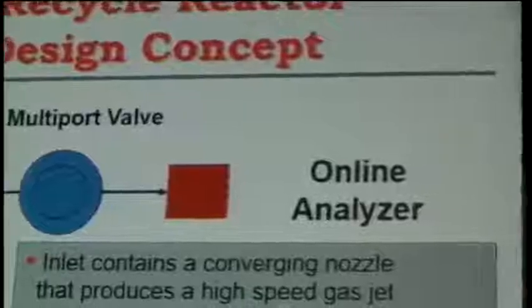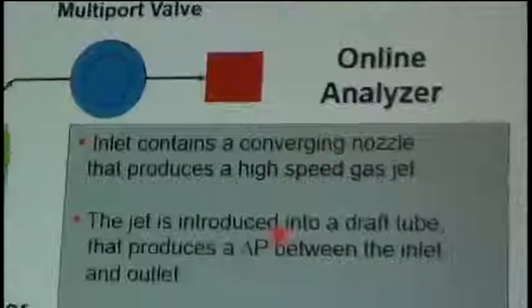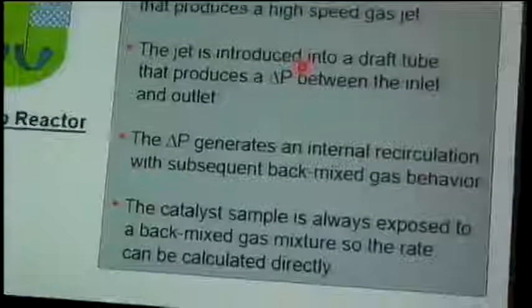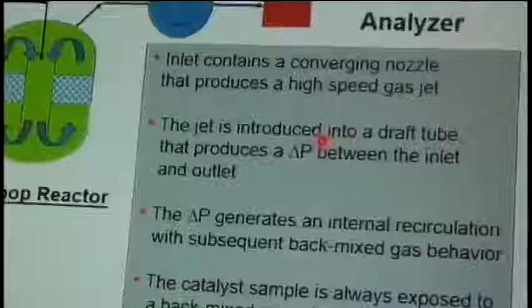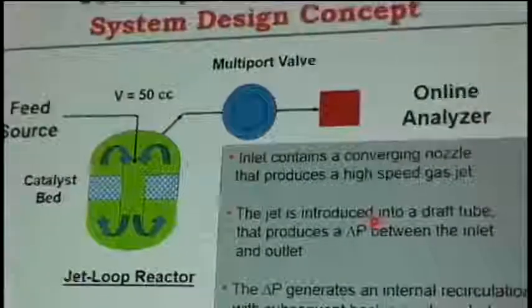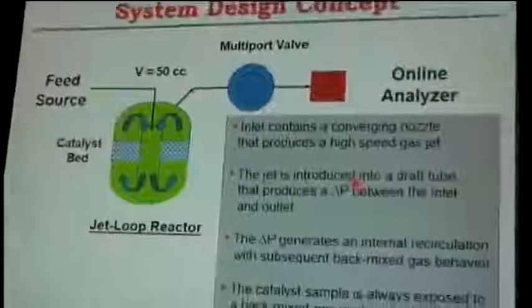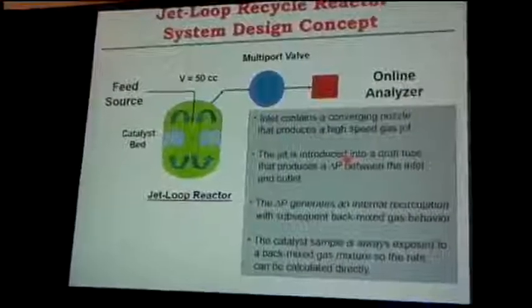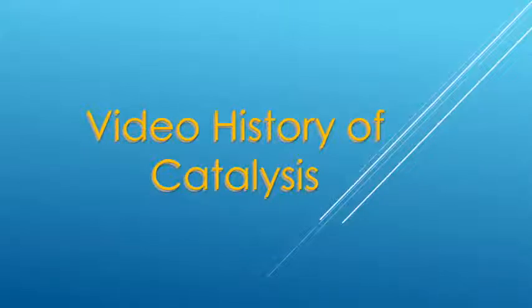Now let's take a minute and look at the jet loop reactor design concept. One of the reasons for looking at this particular design is that, unlike some of the other reactors, it doesn't involve any moving parts. When you deal with certain types of gases which are very corrosive, moving parts can lead to serious maintenance problems.